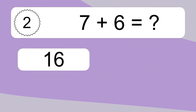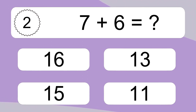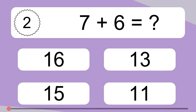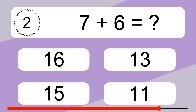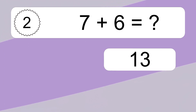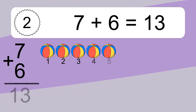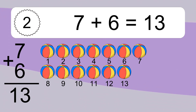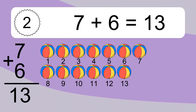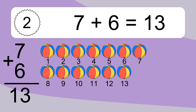7 plus 6 equals what? 7 plus 6 equals 13. Let's count it. 1, 2, 3, 4, 5, 6, 7, 8, 9, 10, 11, 12, 13.